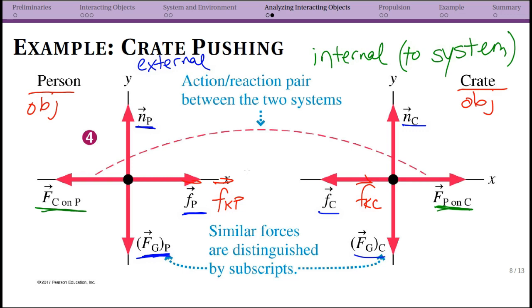The final thing that is new now that we have these two free body diagrams: we draw this dashed line to show that these forces are related. Later on we get to say that because FC on P and FP on C are action-reaction pairs, we get to say that FP on C is exactly equal to the negative force C on P. They are equal in magnitude but opposite in direction.